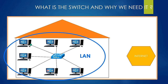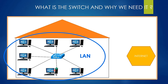PC one will send a packet to PC six. As you see in the visual, the packet first goes to the switch. Then the switch looks at the inside of the packet and learns the destination of the packet, and finally the switch sends the packet to its destination. If PC one can send a packet to PC six, this means that PC one and PC six can communicate with each other. If a computer can send a packet to another computer, this refers to these two computers being on the same network.